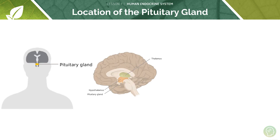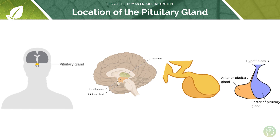The pituitary gland is located just below the hypothalamus in the brain. People often get confused about where it is because it affects organs very far from the brain — such as the kidney. The pituitary gland is in the brain, found just below the hypothalamus, which contains the thermoregulatory centre as well as many other centres. You can see the structure here: there is an anterior pituitary at the front and a posterior pituitary at the back, with the hypothalamus sitting above.